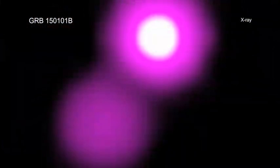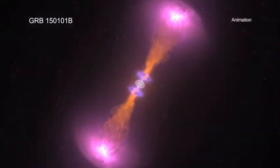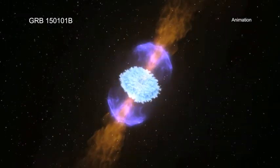The object of the new study, called GRB 150101B, was first reported as a gamma-ray burst detected by Fermi in January 2015.